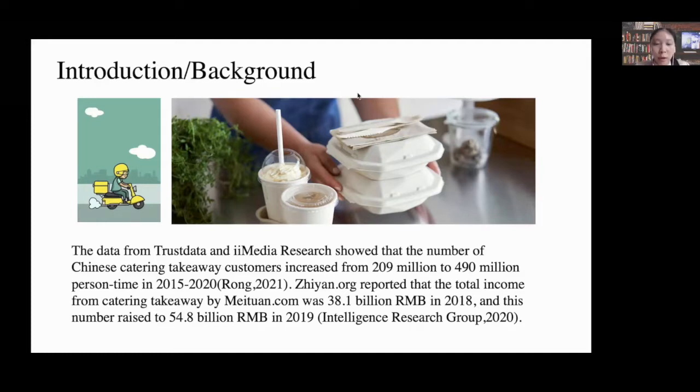The total income of catering takeaway by Meituan.com was 38.1 billion RMB in 2018, and this number rose to 54.8 billion RMB in 2019. China's takeaway industry consumed hundreds of millions of food boxes within one year, and it would take at least a few hundred years to degrade the plastics which make these food boxes after use. To reduce the pollution from plastic and protect the environment, Chinese government issued a series of laws to reduce the use of plastic products in retail and food takeaway industry.